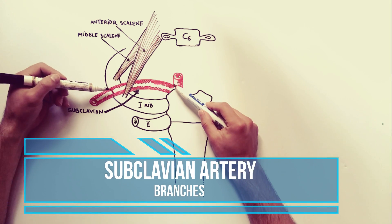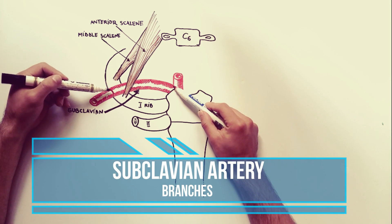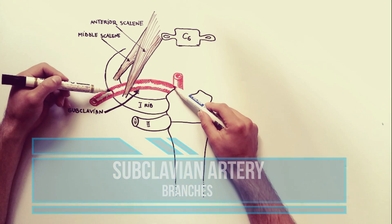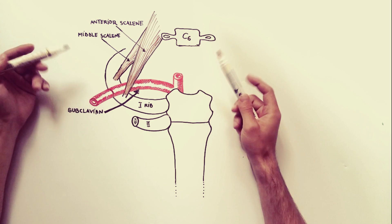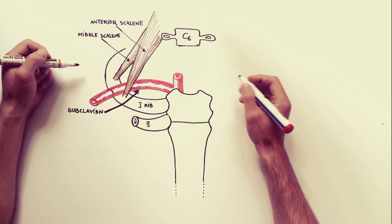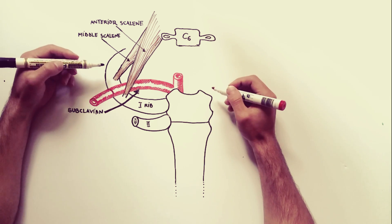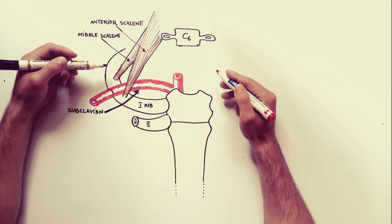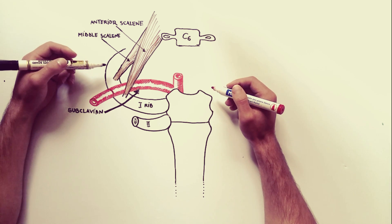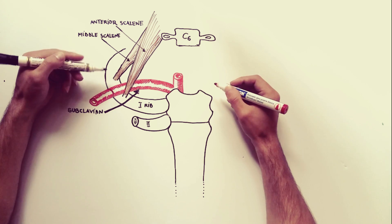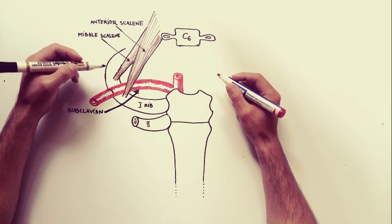Today we will discuss the subclavian artery. On each side, the subclavian artery arches laterally onto the first rib, passing between the anterior and middle scalenus muscles. At the outer border of the first rib it ends by becoming the axillary artery. The right subclavian artery originates from the brachiocephalic trunk.